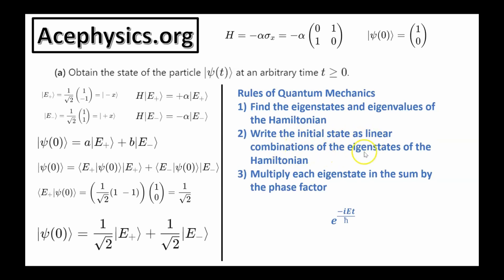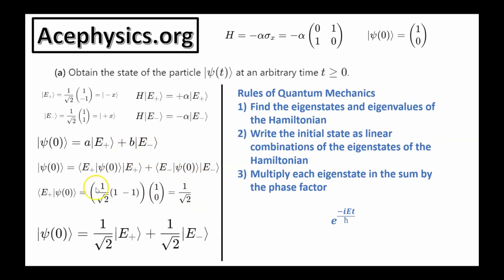Step 2: write the initial state as a linear combination of the eigenstates. The initial state psi of 0 equals (1, 0). We write psi of 0 as A times E plus plus B times E minus. To find A, we take the inner product of psi of 0 with E plus — this tells us how much of psi of 0 is along E plus. To find B, we take the inner product of psi of 0 with E minus. We get A equals 1 over root 2, and the wave function at t equals 0 is 1 over root 2 times E plus plus 1 over root 2 times E minus.